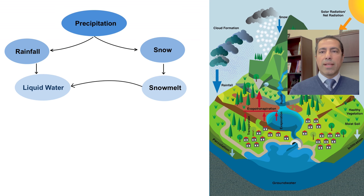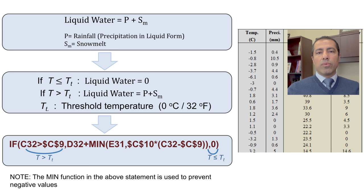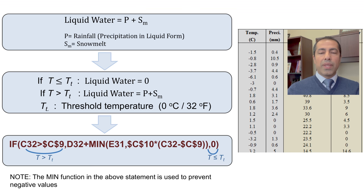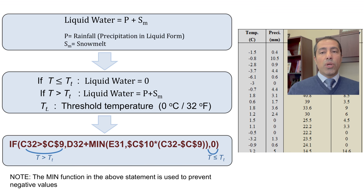We decomposed precipitation to rainfall and snow based on temperature and calculated snow melt. The next step is calculating liquid water, which we define as everything available in liquid form: rainfall plus snow melt. Our assumption is: if temperature is equal to or below the freezing level, liquid water is equal to zero — everything is frozen. If temperature is above zero, then liquid water equals precipitation P (falling as rain) plus snow melt. This strong assumption minimizes the number of parameters we need.